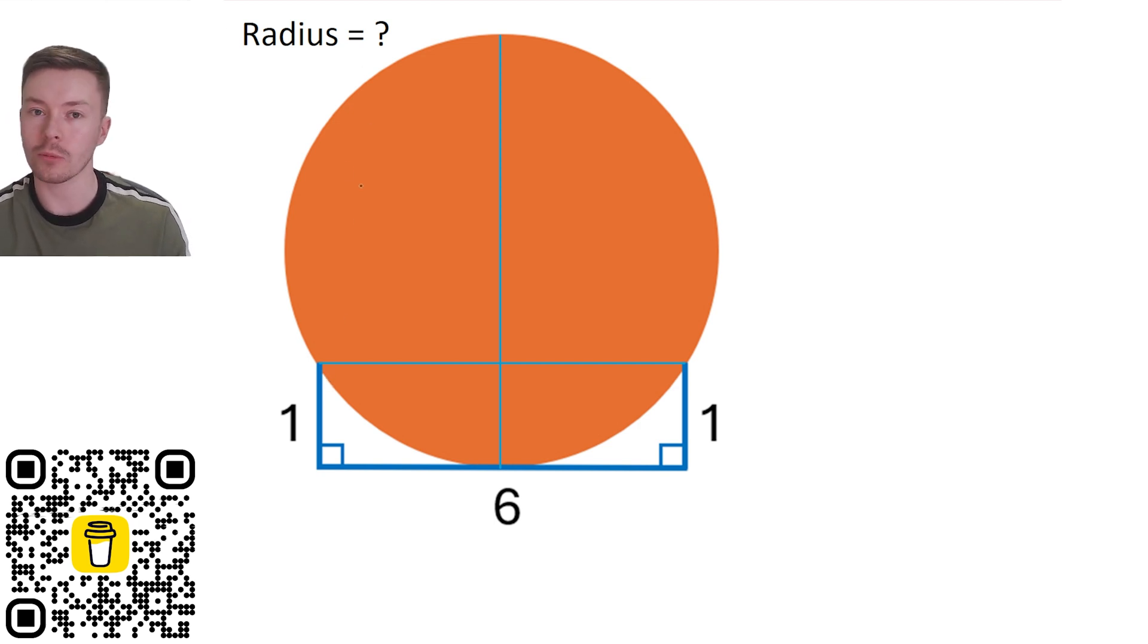Now, once I've done that, I'm going to start labelling some of these lengths. So that's going to have a length of one because that's the same height. These are going to have length three and from here to here is going to be a length of 2R, I'm going to call it, minus one because we're interested in working out that radius.